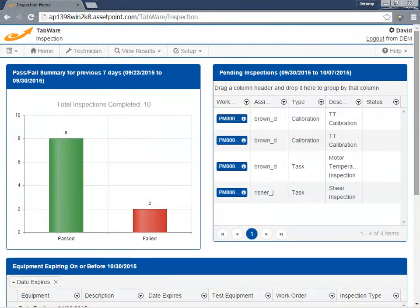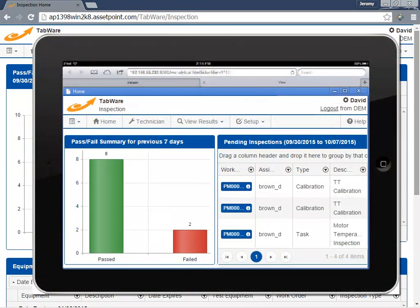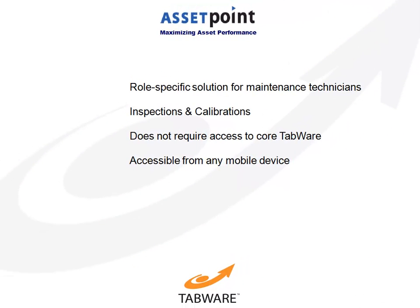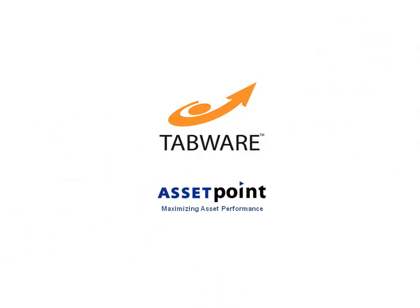Maximizing asset performance depends on efficient and accurate work documentation with mobile accessibility. Tabware Inspections provides robust checklists, inspection, and calibration documentation without the requirement of a seat or license for the full Tabware solution. Tabware Inspections by AssetPoint is easy to learn and easy to use, leading to rapid user adoption.